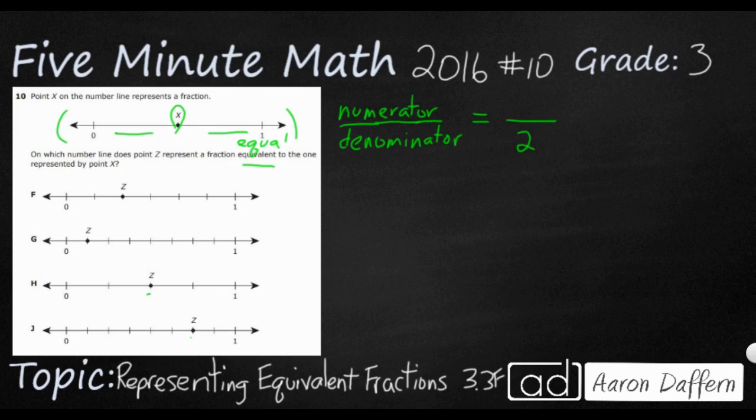The numerator is going to be how many ticks over from zero it is. So this X is on the very first tick over. So my fraction is one half or one over two. And that makes sense because we've got half of the number line right there and then half of the number line right there.